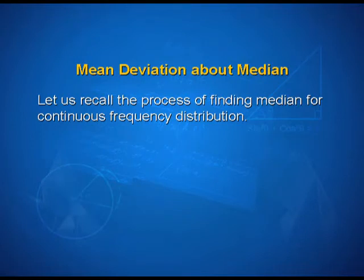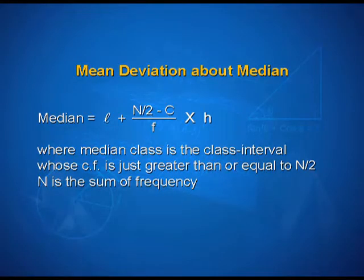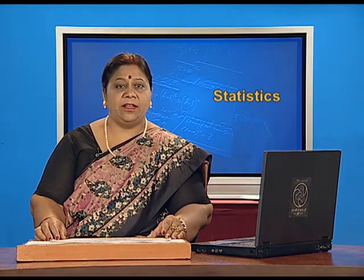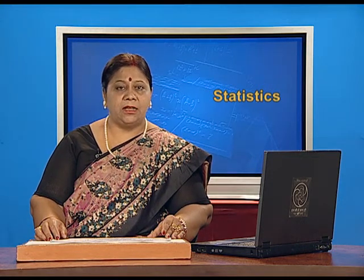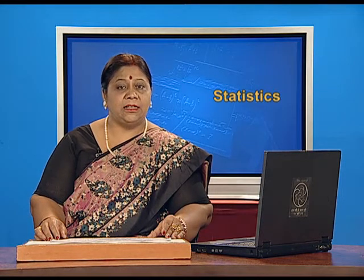While taking deviations, let us recall the process of finding median for continuous frequency distribution. The data is first arranged in ascending order. Then, the median of continuous frequency distribution is obtained by first identifying the class in which the median lies, that is the median class, and then by applying the formula of median: L plus (n/2 minus c) upon f, into h, where the median class is the class interval whose cumulative frequency is just greater than or equal to n/2, and n is the sum of the frequencies. Here, L, f, h and c are respectively the lower limit, the frequency, the width of the median class, and c is the cumulative frequency of the class just preceding the median class.